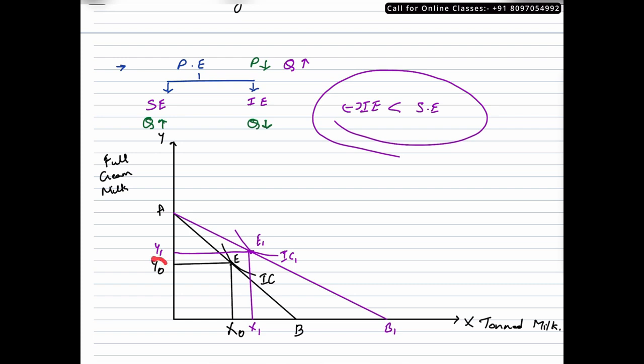Let me put it as Y1. So he is buying Y0 initially of Y. When the price of toned milk fell, he did increase his quantity from X0 to X1. But at the same time, he also increased his consumption of full cream milk. Because now he has some spare money left with him that he can use to buy a superior commodity. So when we join these two points, these E points, we get a curve like this. This is a PCC curve which is upward sloping.